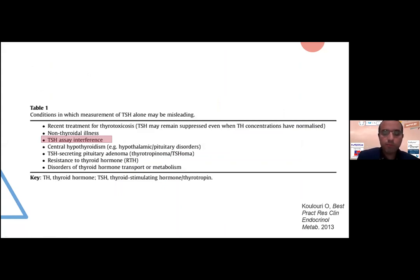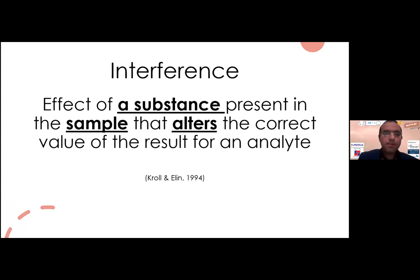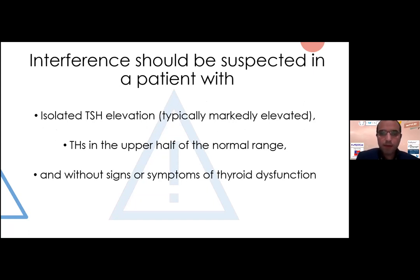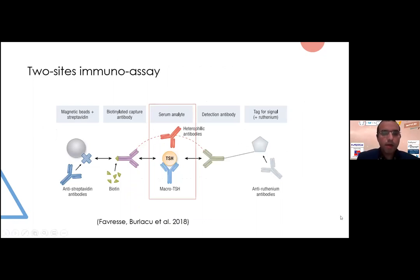There are some conditions in which measurement of TSH is misleading, and one of these is TSH assay interference. We've heard about central hypothyroidism, TSH-secreting pituitary adenoma, and resistance to thyroid hormones at this conference. Interference is the effect of a substance present in the sample that changes the correct value of the result for an analyte — here the analyte is TSH. Interference should be suspected when TSH is very high, FT4 and FT3 are normal, with FT4 in the upper half of the normal range, and there are no symptoms or signs of thyroid dysfunction.